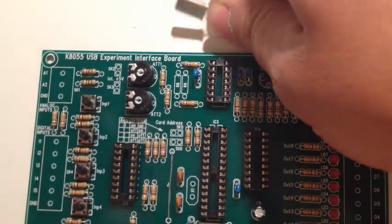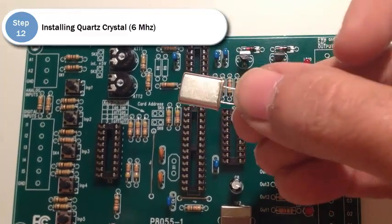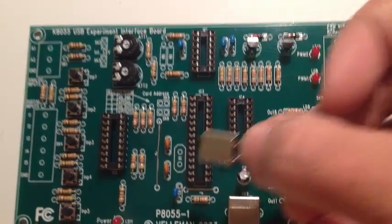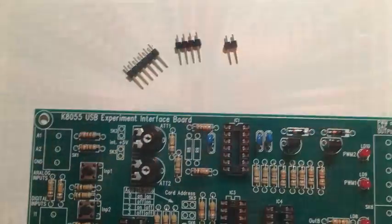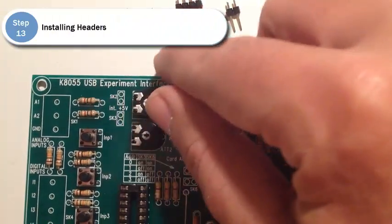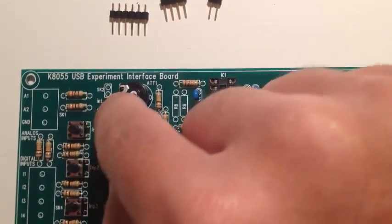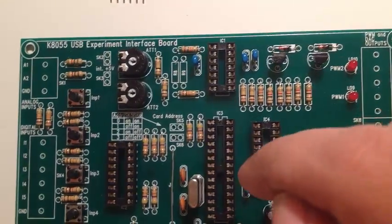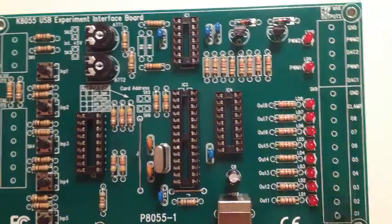Step 12, installing the quartz crystal. This is a 6 megahertz crystal. It's not polarized, so you can install it either direction. And it goes right there where it says X1. And step 13 is installing these headers. They come in segments of 6 and you have to break them apart into segments of 2 to install them into SK2, SK3, and SK5, and SK6 here. And then the rest of the SKs will be the screw down terminals there.